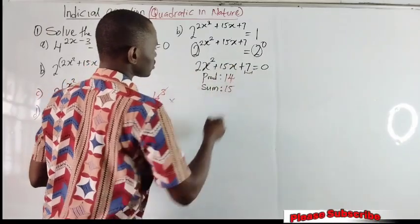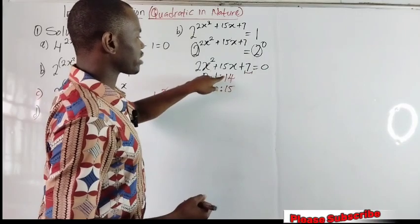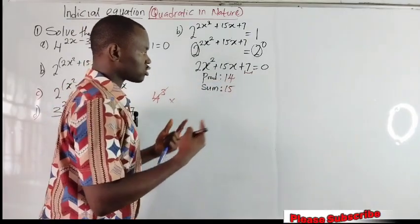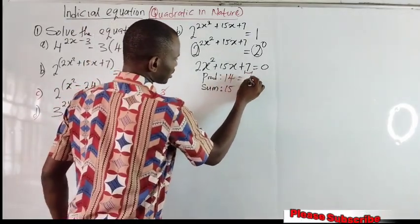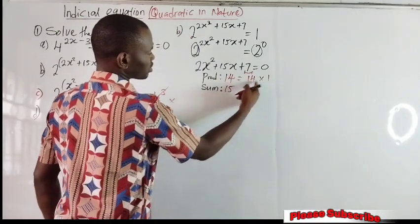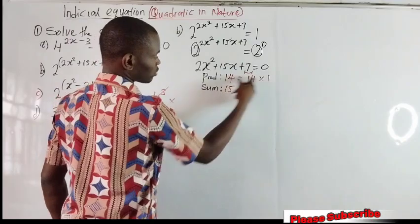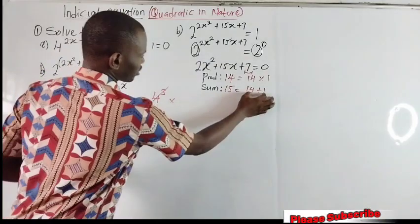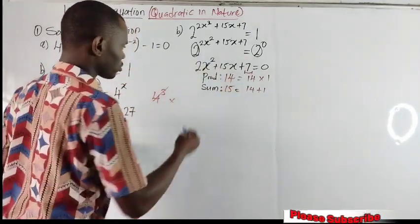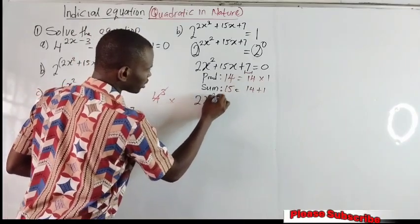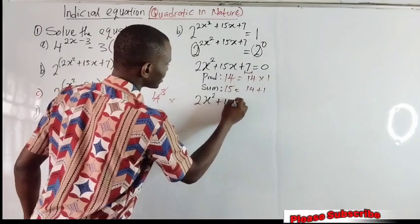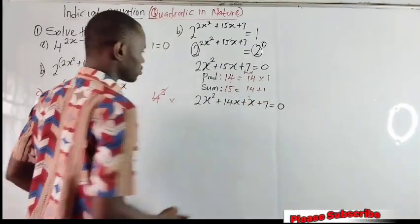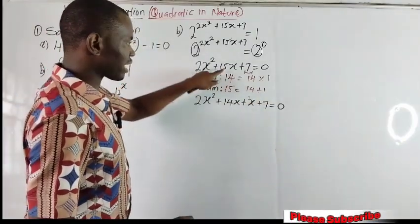We are looking for two factors that when multiplied give 14 and when added give 15. No other numbers than 14 and 1 — 14 times 1 gives 14, and 14 plus 1 gives 15. So we use these two factors to substitute for 15 in this equation. We have: 2x squared plus 14x plus 1x — I will just write x — plus 7 equal to 0. 14x plus x gives us back our 15x.